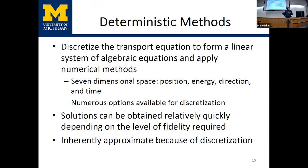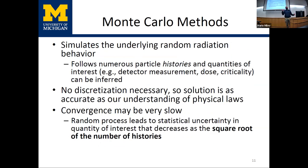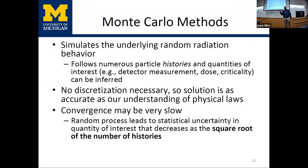Deterministic methods tend to give you a solution quickly and efficiently relative to Monte Carlo. With Monte Carlo methods, we don't solve the equation — we simulate the underlying physics and infer the solution. The advantage is no discretization is necessary, so we don't have to chunk the problem into spatial grids or energy groups. The simulation is theoretically as accurate as our understanding of the physical laws of nature.